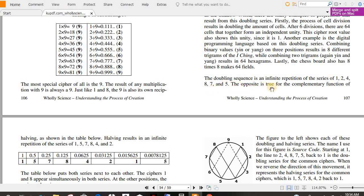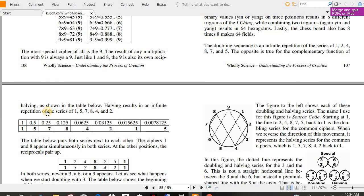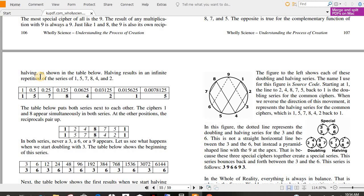The opposite is true for the complementary function of halving. As shown in the table below, halving results in an infinite repetition of the series of 1, 5, 7, 8, 4, and 2. See, 1, 5, 2 and 5, 7, 8, so on and so forth. The table below puts both series next to each other. The ciphers 1 and 8 appear simultaneously in both series. At the other positions, the reciprocals pair up.